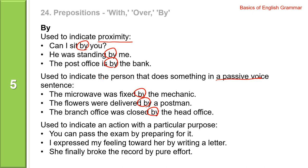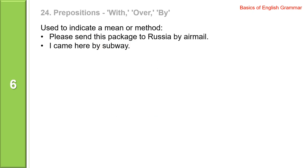By is used to indicate an action with a particular purpose. You can pass the exam by preparing for it. I expressed my feelings toward her by writing a letter. She finally broke her record by pure effort. By is used to indicate a means or method. Please send this package to Russia by email. I came here by subway.